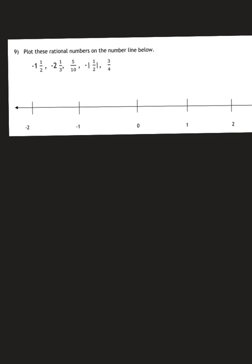We have 5 different numbers. We have negative 1 and 1 half, negative 2 and 1 third, 5 tenths, the opposite of the absolute value of 1 half, and 3 fourths.